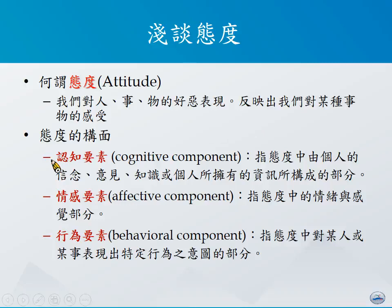首先是认知的构面，它所泛指的是在态度当中，由个人的信念、意见、知识或个人所拥有的资讯所构成的部分。例如，一个学经济的人可能会觉得市场价格是由供给量或需求量来决定；而对行销的人来讲，他会强调价格涉及到消费者价值认知下产生的结果。